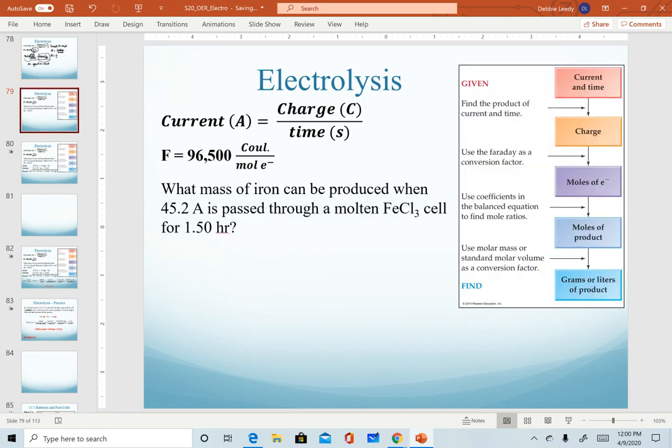All right, so our practice calculation. We want to know what mass of iron can be produced when 45.2 amps is passed through a molten iron chloride cell for one and a half hours. The general setup for the calculations we're going to do are found over here. For the most part, we're essentially just doing dimensional analysis, just setting up units, keeping track of what we have and where we want to or how we need to set them up.